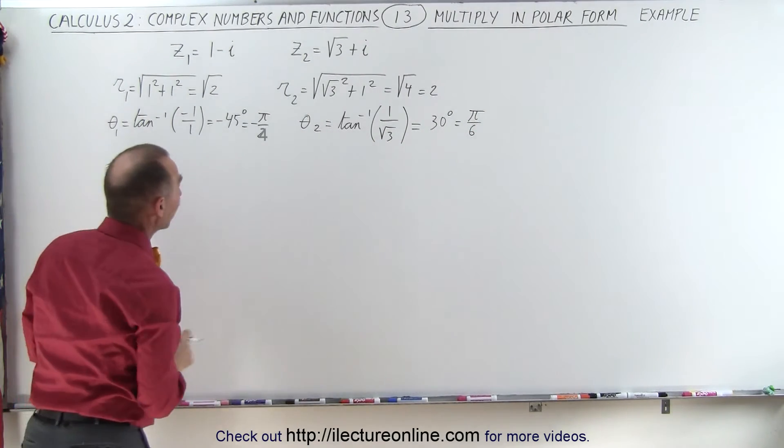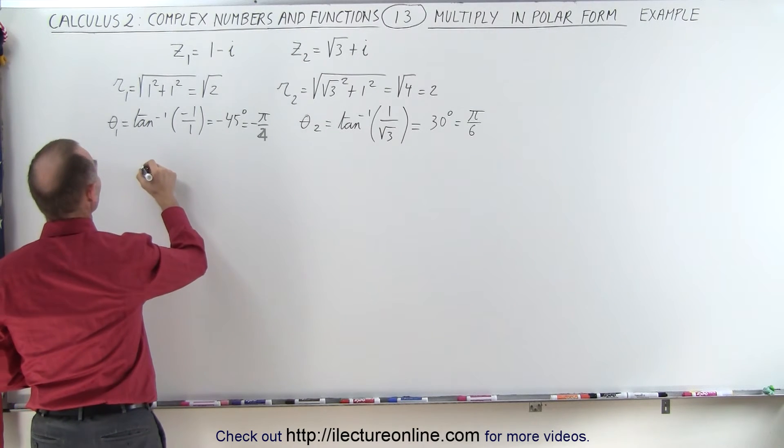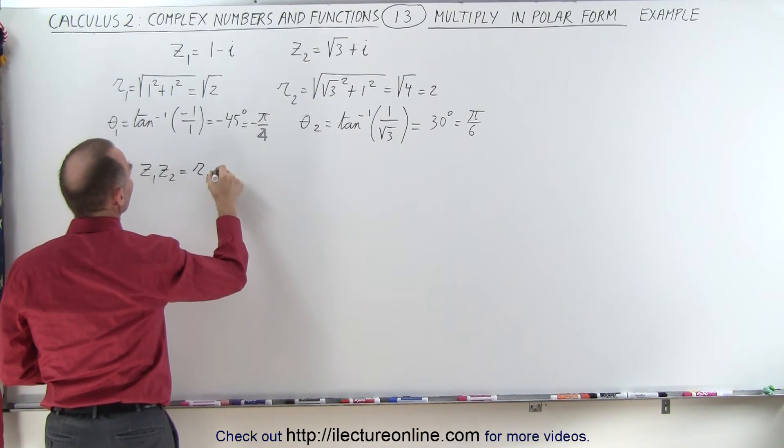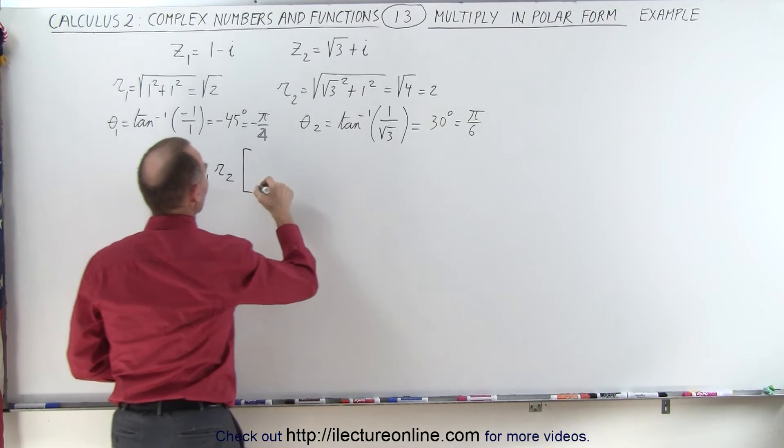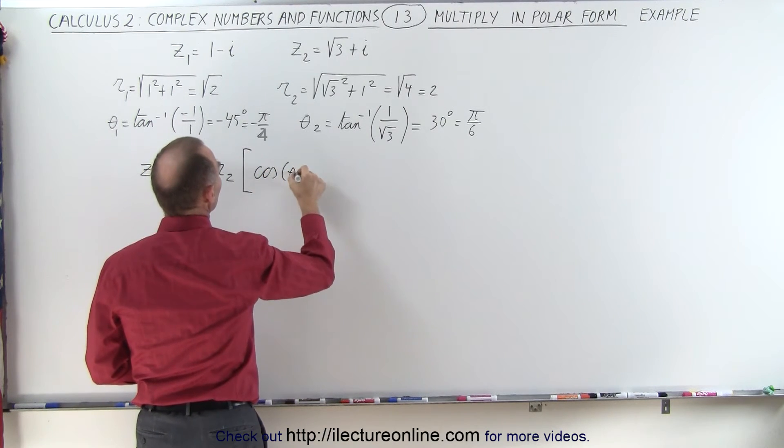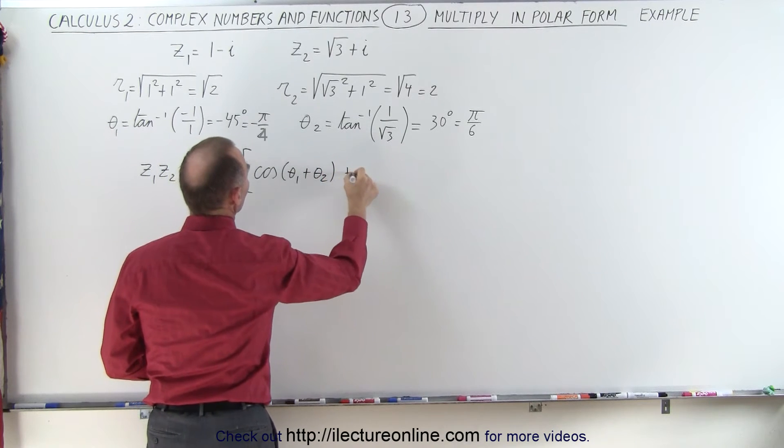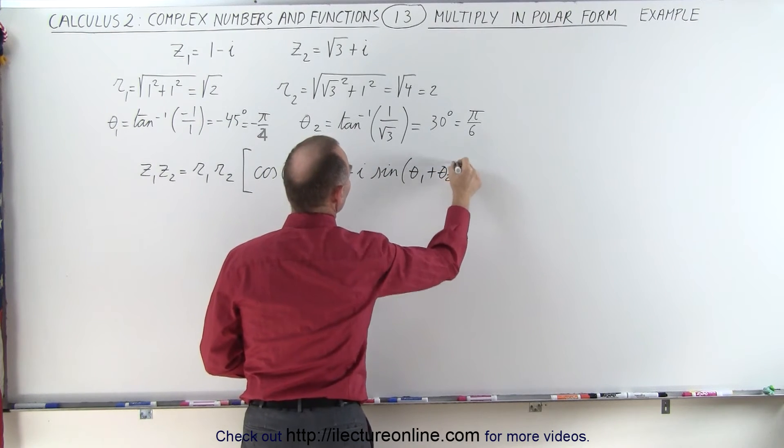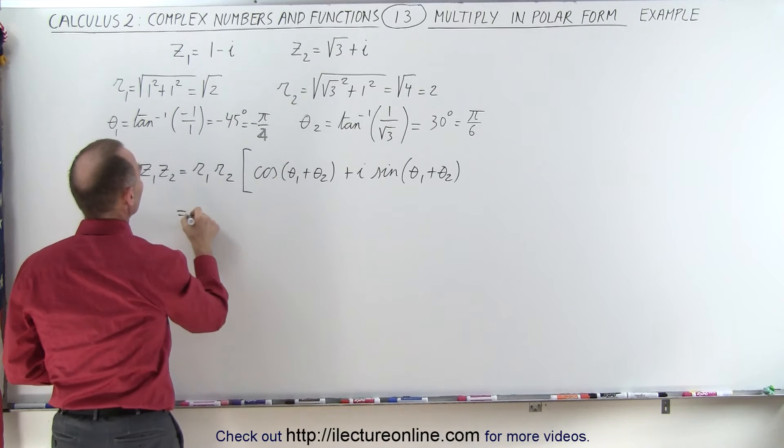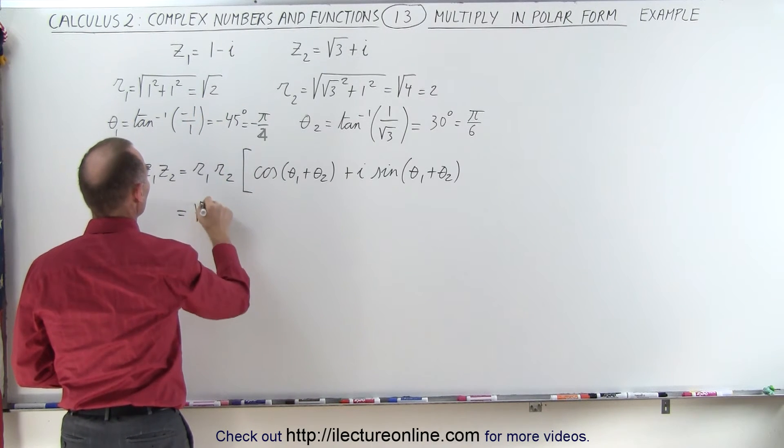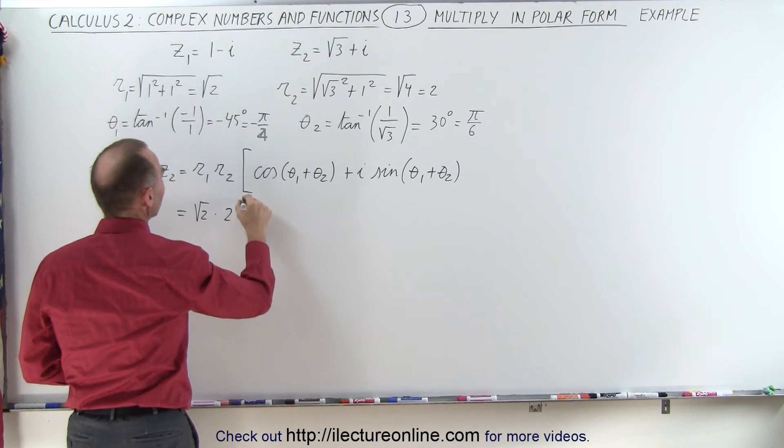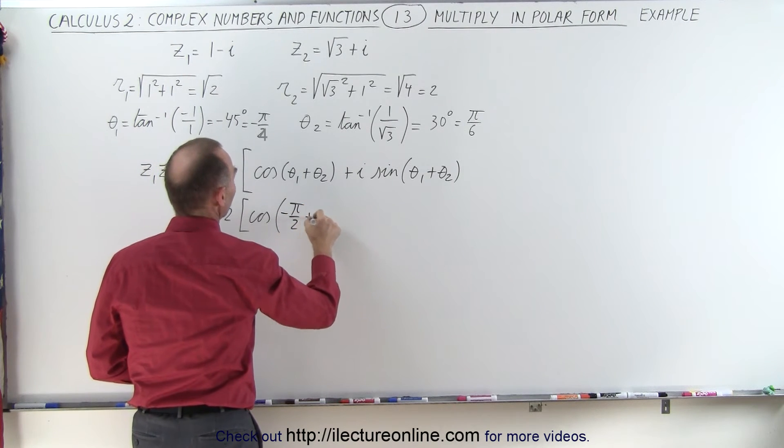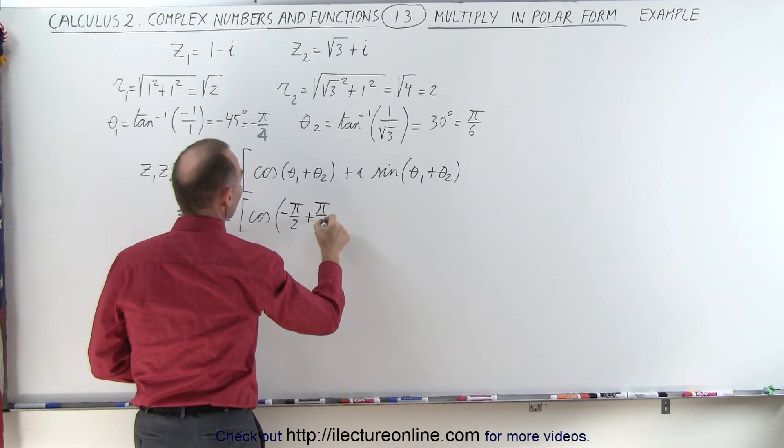Now we're ready to multiply both of them in polar form because now we can say that Z1 times Z2, which is equal to R1 times R2 times the cosine of theta 1 plus theta 2. So let's go ahead and plug that in. This is equal to R1, which is the square root of 2, times R2, which is 2, times the cosine of theta 1 plus theta 2, which is minus pi over 2 plus pi over 6.